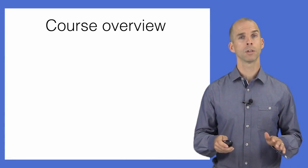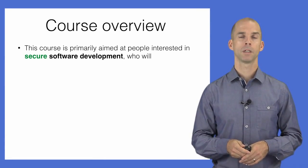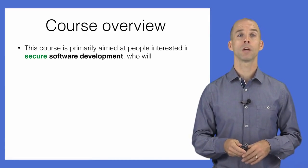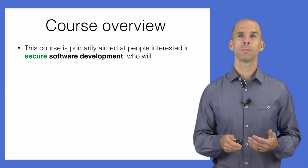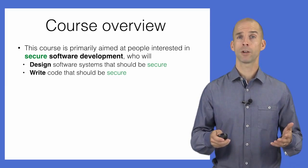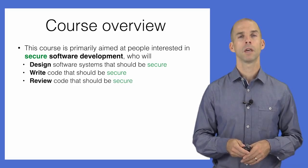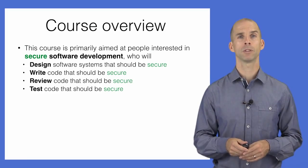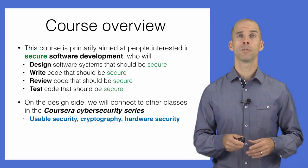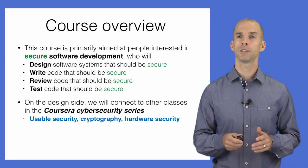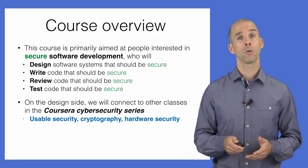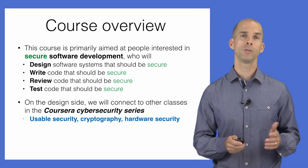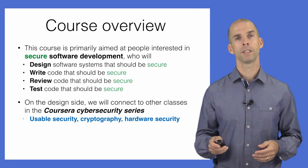The target audience for this course is those involved or interested in developing secure software — people who design software systems, write code, review code and designs that aim to be secure, and test software to ensure it's secure. This course is one of several in the Maryland Cybersecurity Center's Coursera Cybersecurity Specialization, which also includes Usable Security, Cryptography, and Hardware Security.